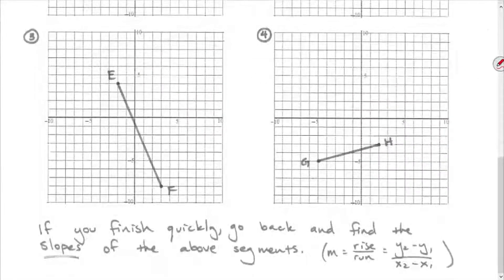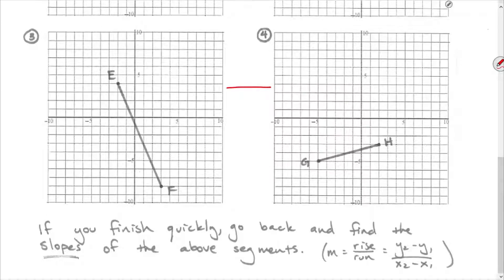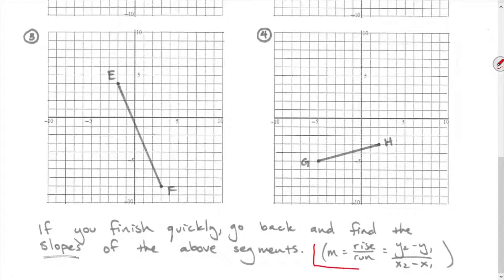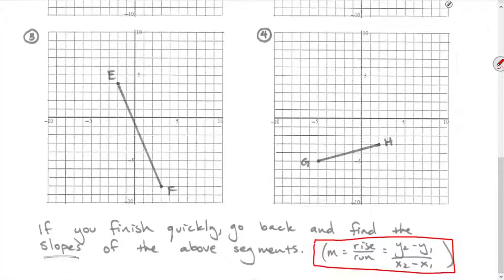I also want to review how to find slope. Slope is the measure of how steep the line is. Reading left to right, if it's going up, the slope is positive; if it's horizontal, it's zero; if it's going down left to right, the slope is negative. We compute it by finding the rise over the run, or as an equation: y₂ minus y₁ over x₂ minus x₁.